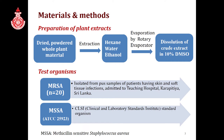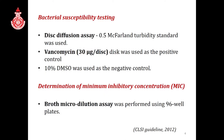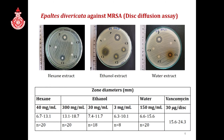We used 20 MRSA strains isolated from patients with skin and soft tissue infections admitted to Teaching Hospital Karapitiya. A methicillin-sensitive standard Staphylococcus aureus was used as a positive control. Bacterial susceptibility was tested using the disc diffusion assay, and minimum inhibitory concentrations (MIC) were determined using the broth microdilution assay with 96-well plates. Vancomycin was used as the positive control, and all tests adhered to CLSI guidelines.